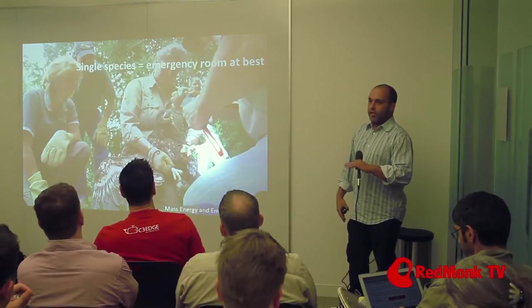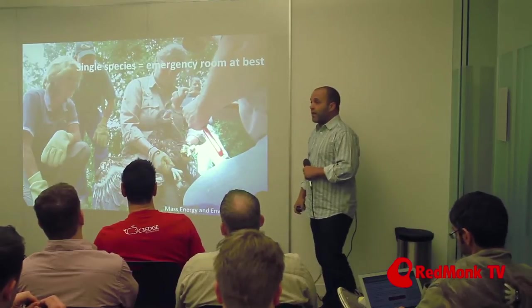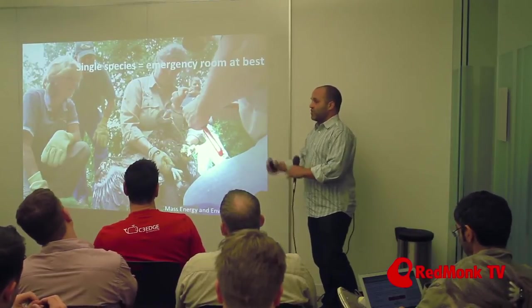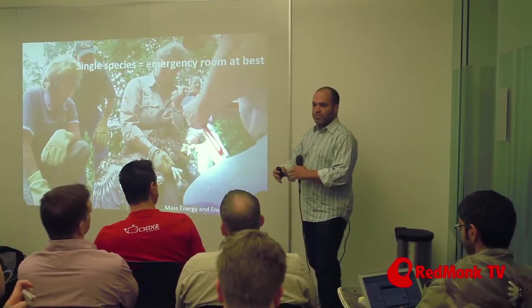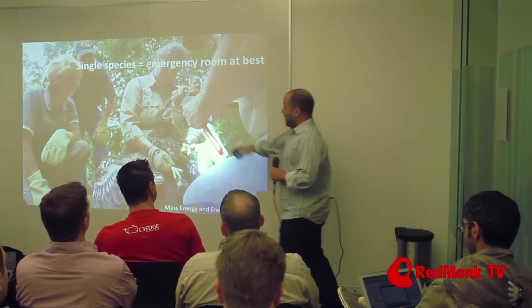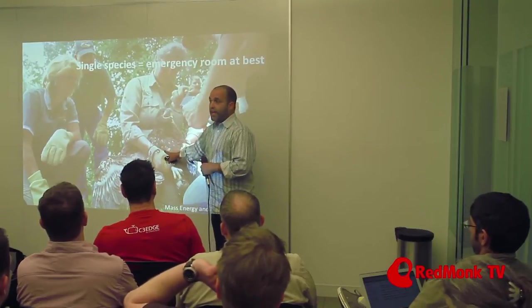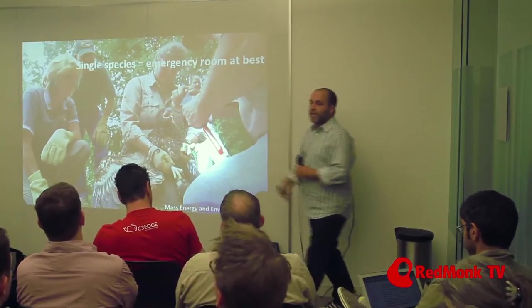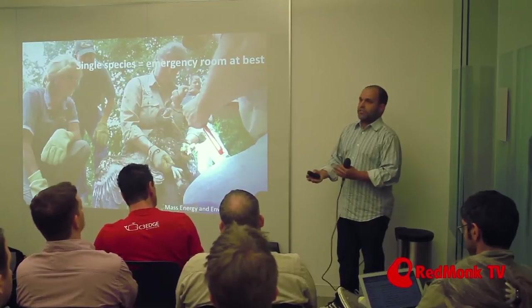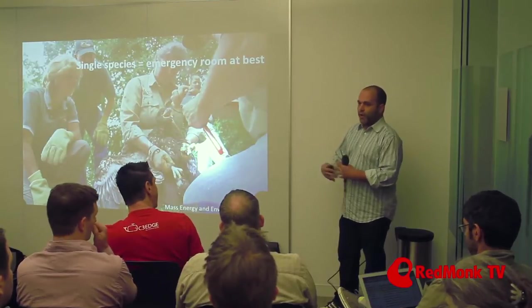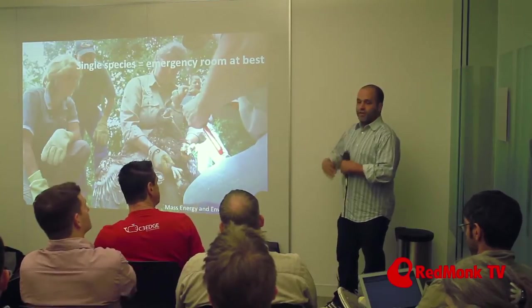And ecologists use it because they found that single species management almost always led to emergency room conservation biology. And so, what I mean by emergency room conservation biology is, oh my gosh, this species is about to go extinct. We need to pour billions and billions of dollars into this one species and then we've only fixed that one species. And the poster child for that is the bald eagle. It worked for the bald eagle and it worked in that case, but in lots of other cases, it doesn't work. We lost the dusky seaside sparrow. By the time we got to the point where we had actually done enough, the species was gone.